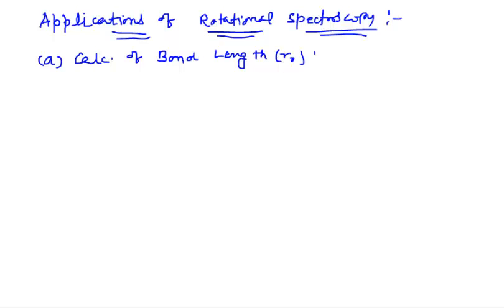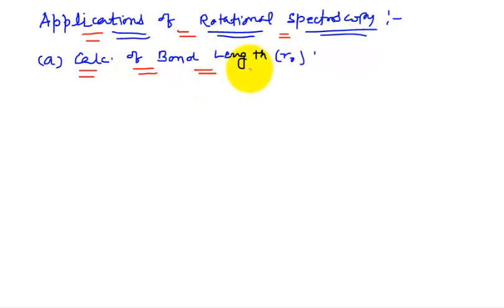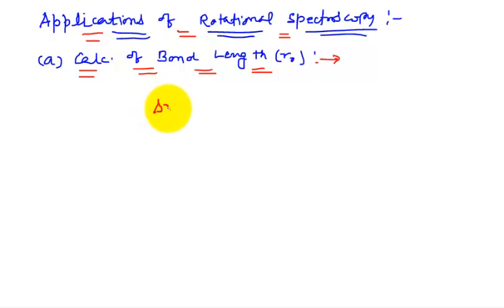Hello everyone. In this video we will discuss the applications of rotational spectroscopy. Firstly, we will discuss how to calculate the bond length, that is R₀, the internuclear distance, using rotational spectroscopy. From the rotational spectra, we know that the spacing delta nu bar is equal to 2B.